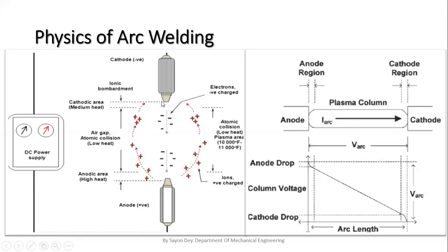Through these atomic collisions, the plasma column is generated and it conducts the current. That is why the circuit is completed through this arc. This is the basic principle of the arc; I am not going into further detail.